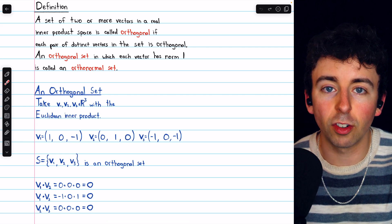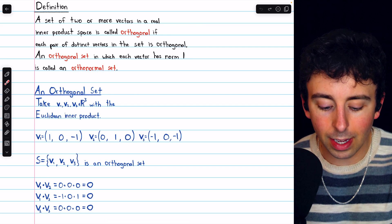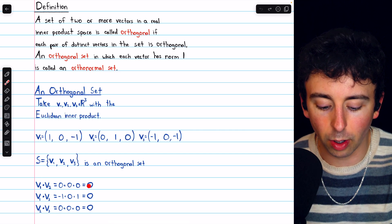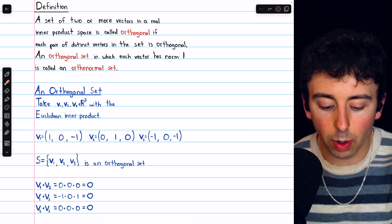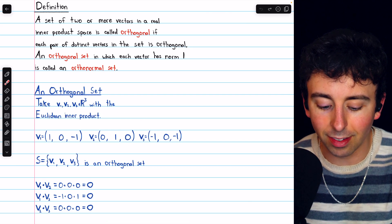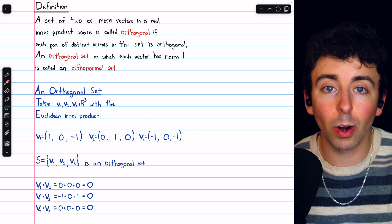We can verify that by computing the inner products. In this case, the inner product is just the dot product. The dot product of V1 with V2 is 0 plus 0 plus 0, so 0, so they are orthogonal. The dot product of V1 with V3, multiplying those corresponding components together, is negative 1 plus 0 plus 1, so 0. So those two vectors are orthogonal.